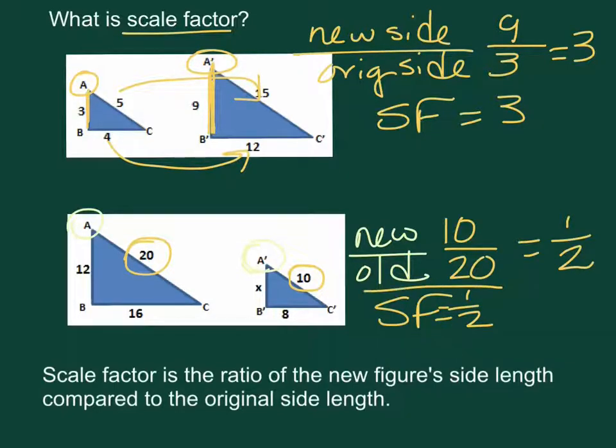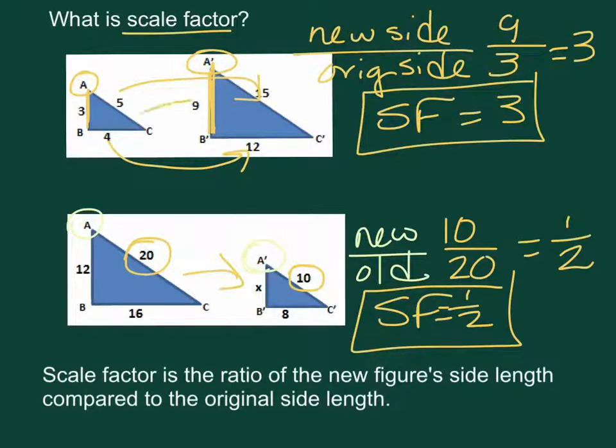If you have a scale factor less than 1, you should have a reduction. If you have a scale factor greater than 1, you should have a dilation that is an enlargement.